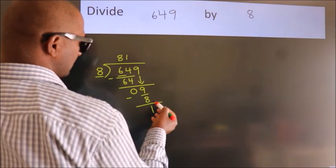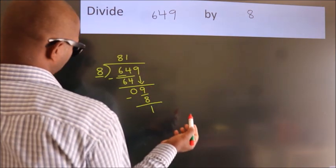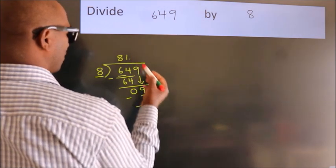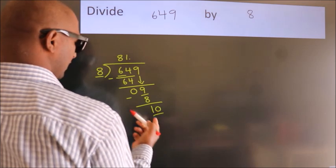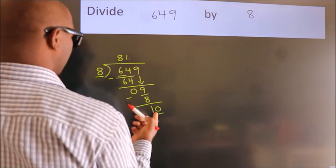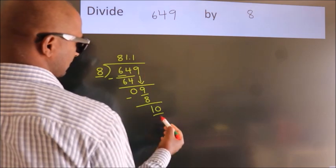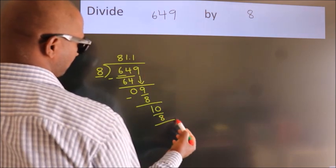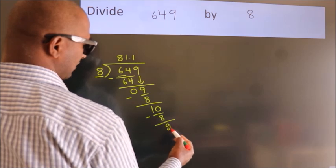After this, no more numbers to bring down, so what we do is put a dot and take zero. So 10. A number close to 10 in the 8 table is 8 times 1 equals 8. Now we subtract and get 2.